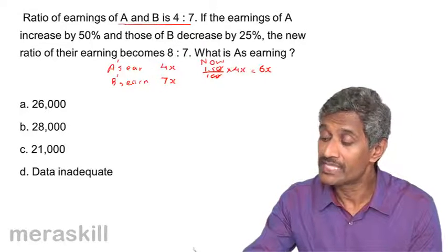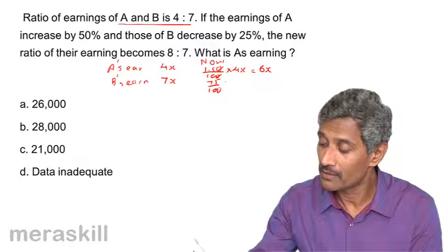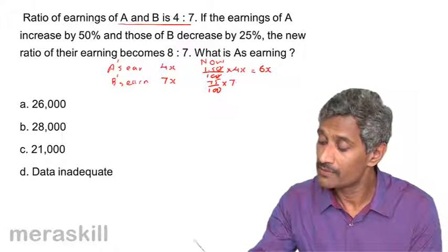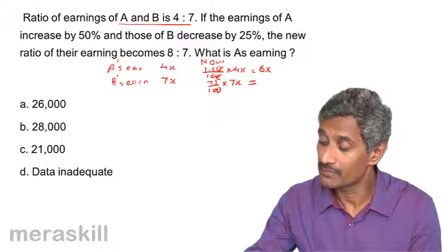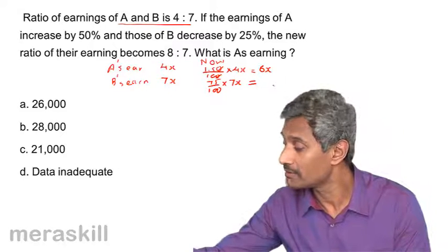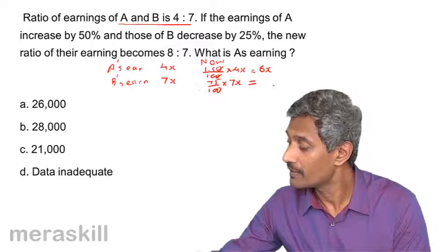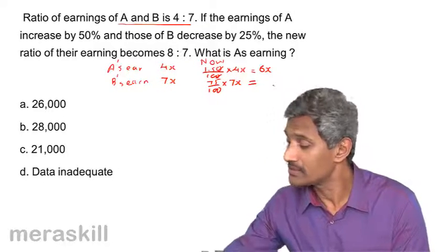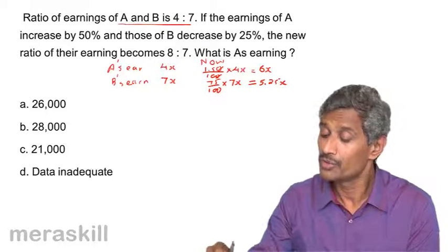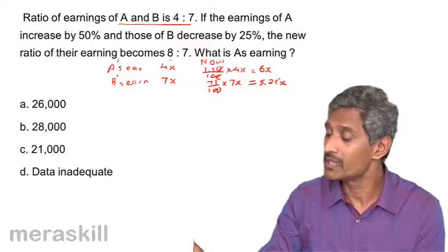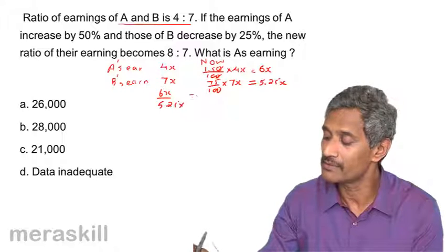And B decreases by 25%. So it is going to be 75% of 7x. This turns out to be 75% of 7x, which is 5.25x. The new ratio of their earnings becomes 8 is to 7. So you have 6x upon 5.25x is 8 by 7.